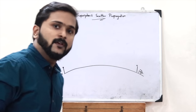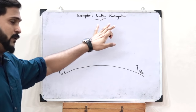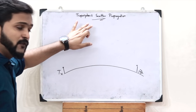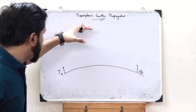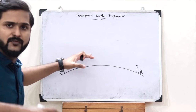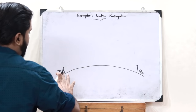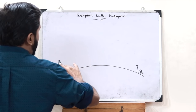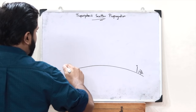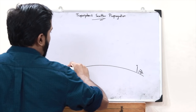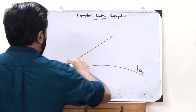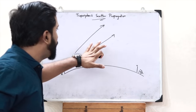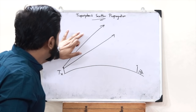In tropospheric scatter propagation, the system makes use of the troposphere — the layer of the atmosphere very close to the ground, only around 15 kilometers from the surface of the earth. The transmitter antenna sends the signal up to this lowermost layer of the atmosphere, directing it toward the troposphere.